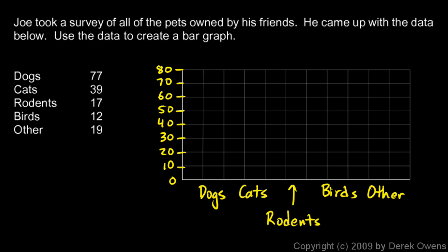Now let's graph the data. There are 77 dogs, so that's a little bit less than 80. I'm going to make a bar up here, a little less than 80, and then draw the lines down, and we can shade this in.